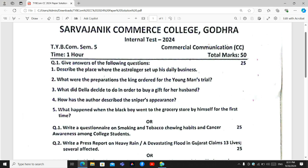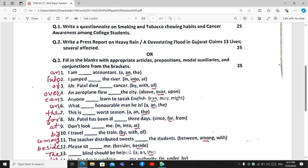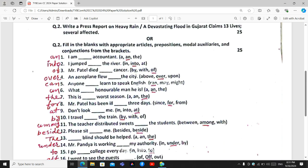You can see here your internal test paper. Look at the optional question number two of your internal test paper. I must read it. Fill in the blanks with appropriate articles, prepositions, modal auxiliaries and conjunctions from the brackets.